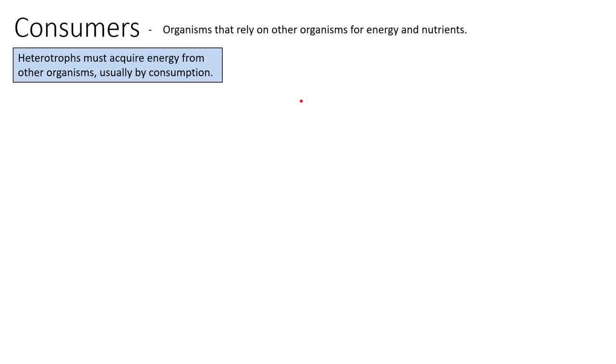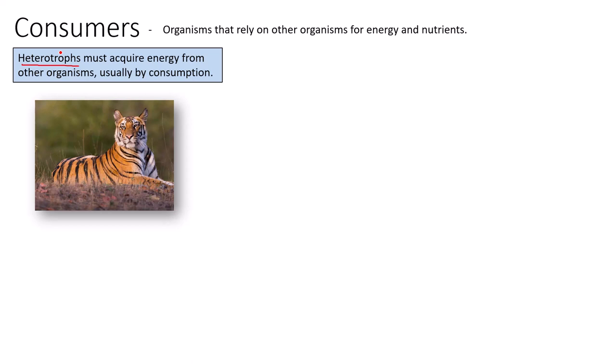So what does it mean to be a consumer? Consumers are organisms that rely on other organisms for energy and nutrients — we are a consumer. Consumers must consume other organisms for energy. We call these consumers heterotrophs. The producers were called autotrophs; the consumers are called heterotrophs. Auto was the prefix for self, trophic means feeding, and hetero means others — so this is feeding on others. These heterotrophs must acquire energy from other organisms, usually by consumption, typically through predation. There are a variety of organisms on the planet that utilize heterotrophic nutrition as their main way of energy capture — a tiger, a rabbit, a bear, a vulture, an earthworm, and fungus.